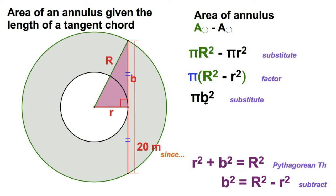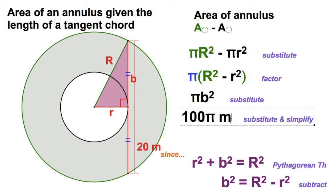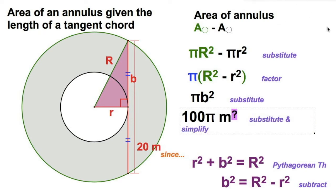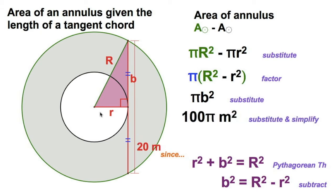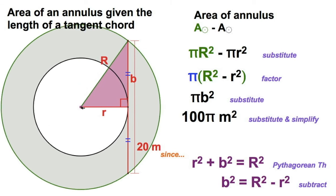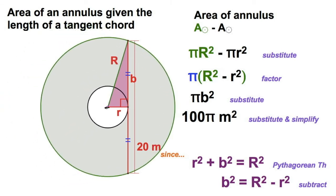The entire area of this annulus is simply pi times b squared — half of the tangent chord, which we're calling b. In this case, that would be 10 meters. So 10 squared is 100, giving us 100π square meters. And that means we've got 100π square meters — that is the exact area, whether it looks like this or whether it looks like that. Amazing.